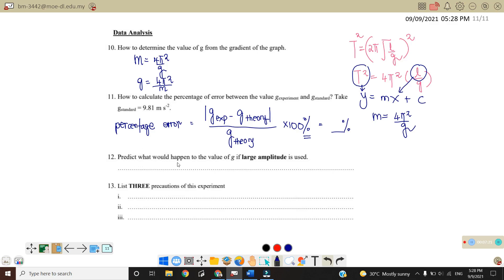Number 12, predict what would happen to the value of G if large amplitude is used, meaning that if we use more than 10 degrees. What will happen is a non-linear path. So meaning that you will not get a linear path, or we can say actually it's not obeying simple harmonic motion.